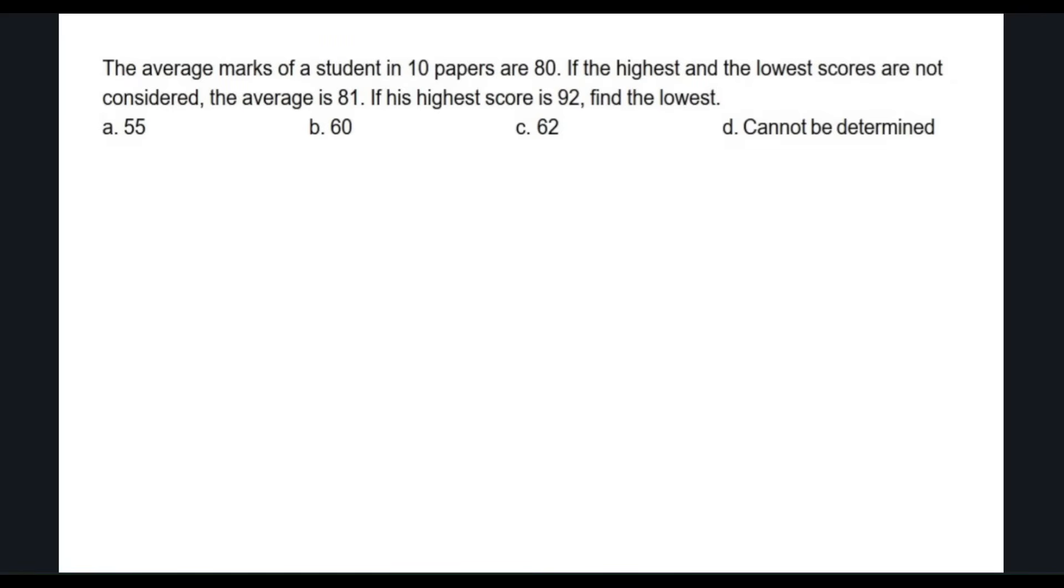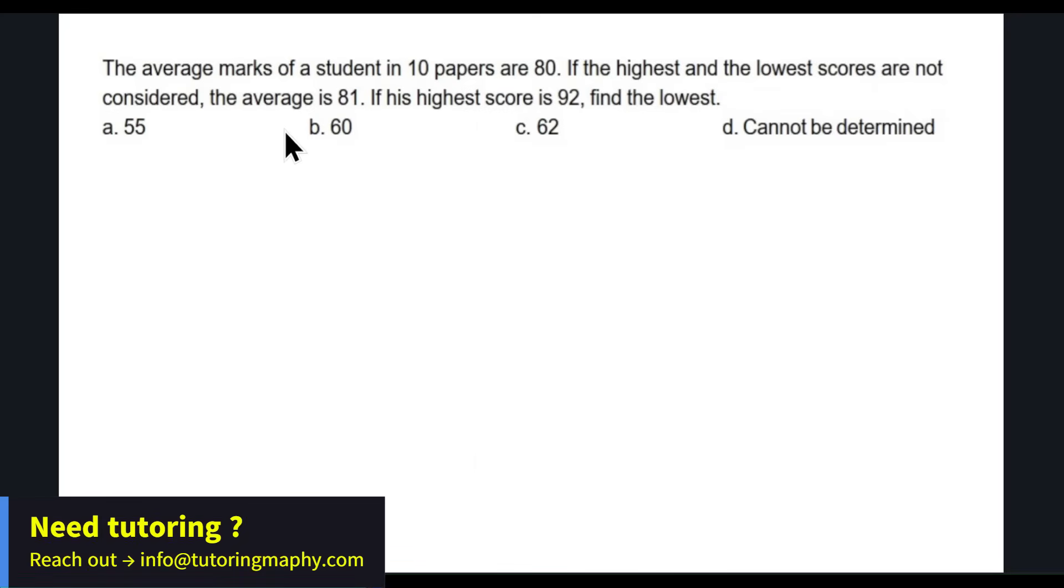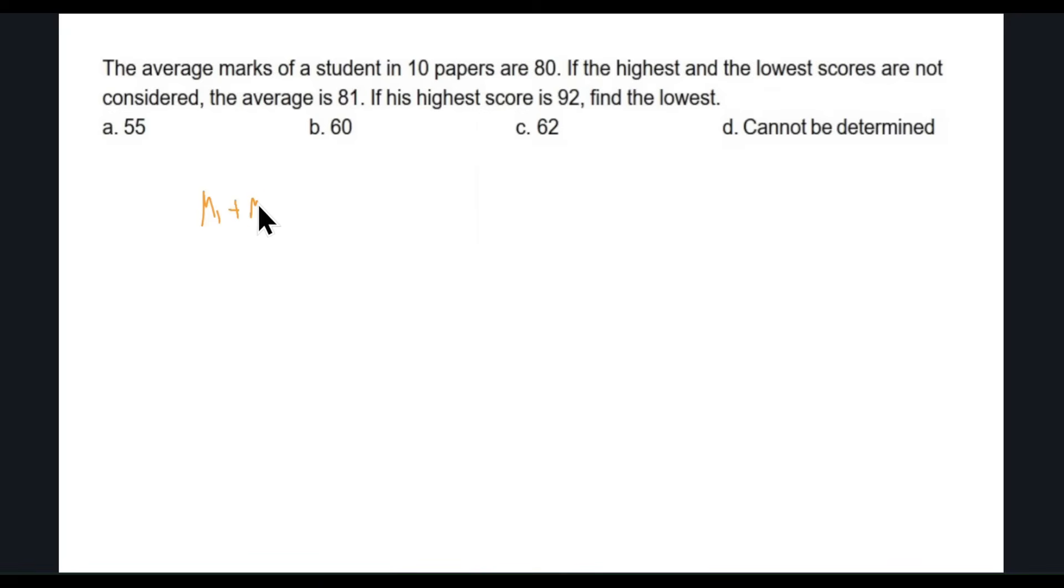This last one is about problem solving and data analysis. Average marks of a student in 10 papers are 80. We don't know the individual marks in the 10 papers. Let's say the marks were M1 plus M2 and so on over 10, and that equals 80. So we know that the sum will be 80 times 10, that is 800.